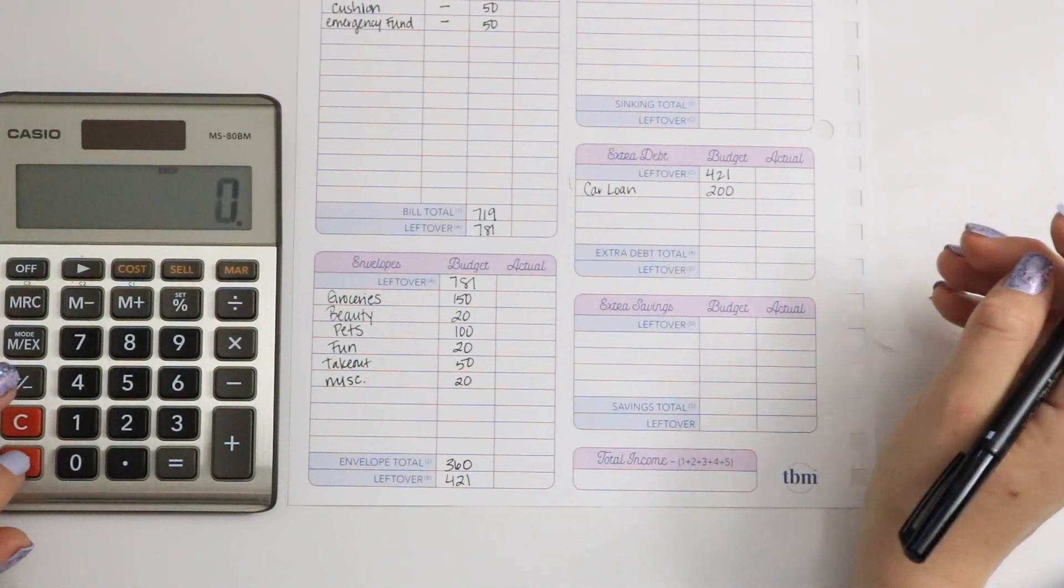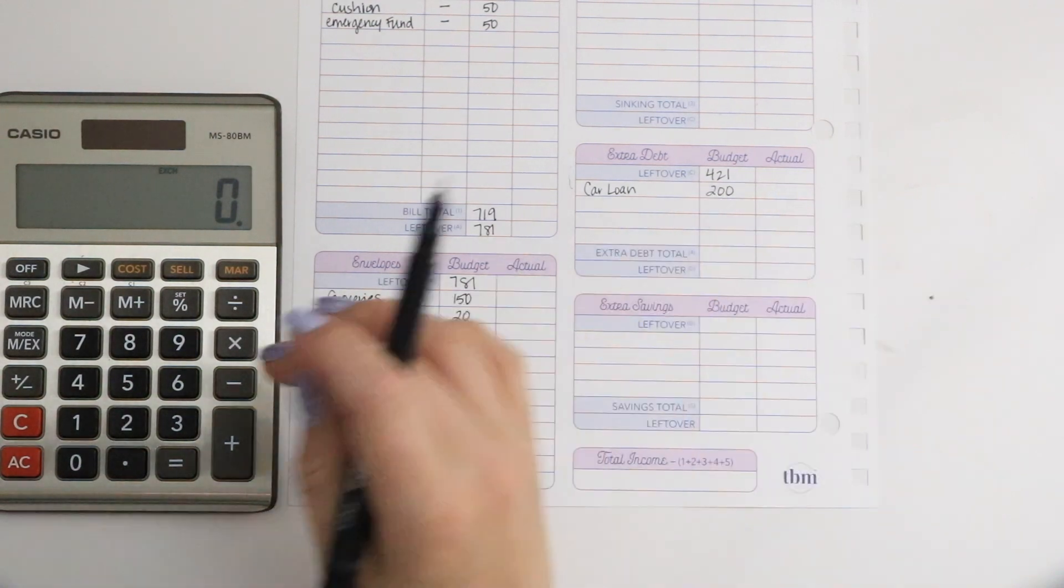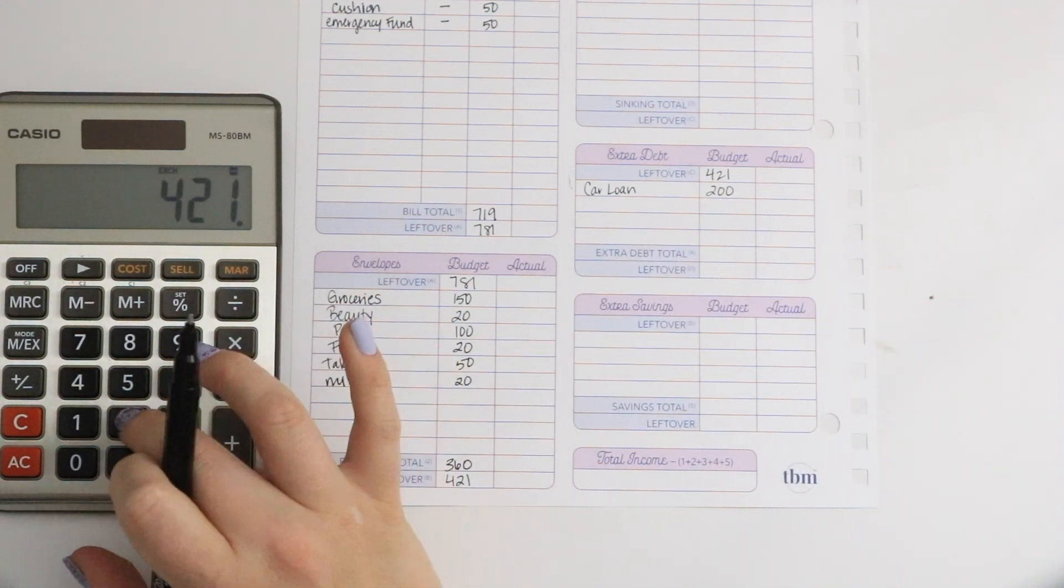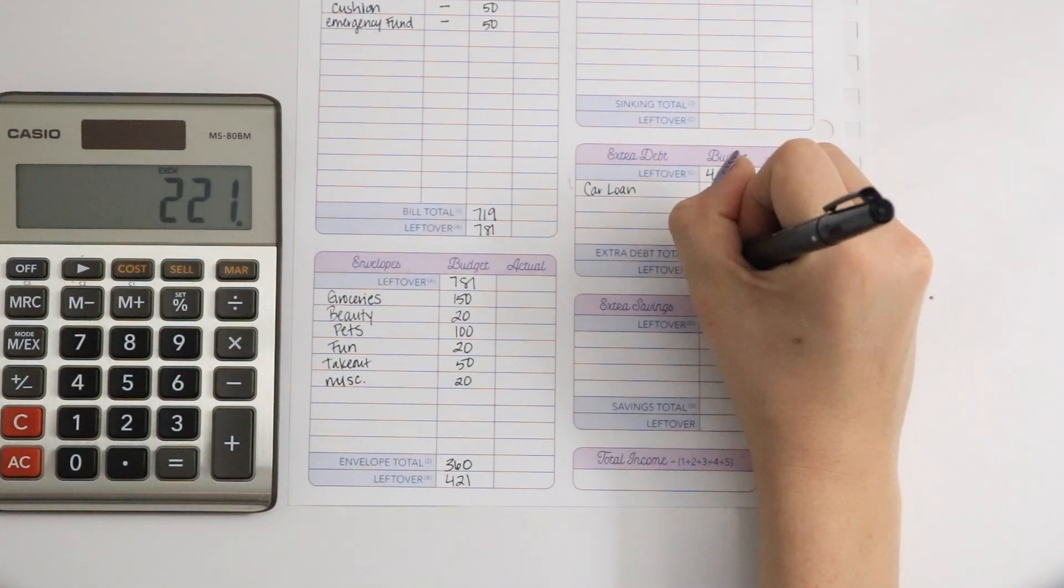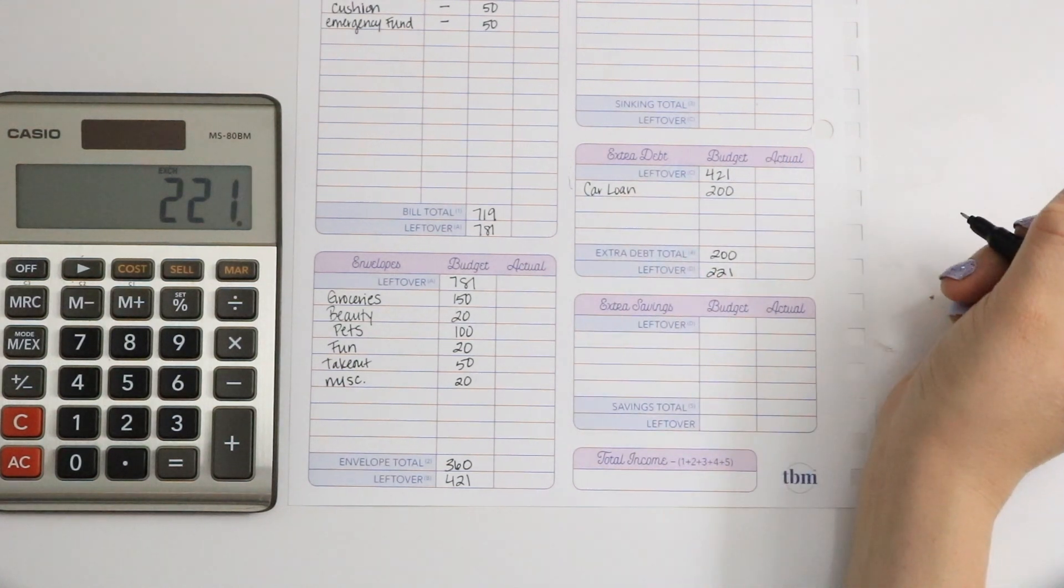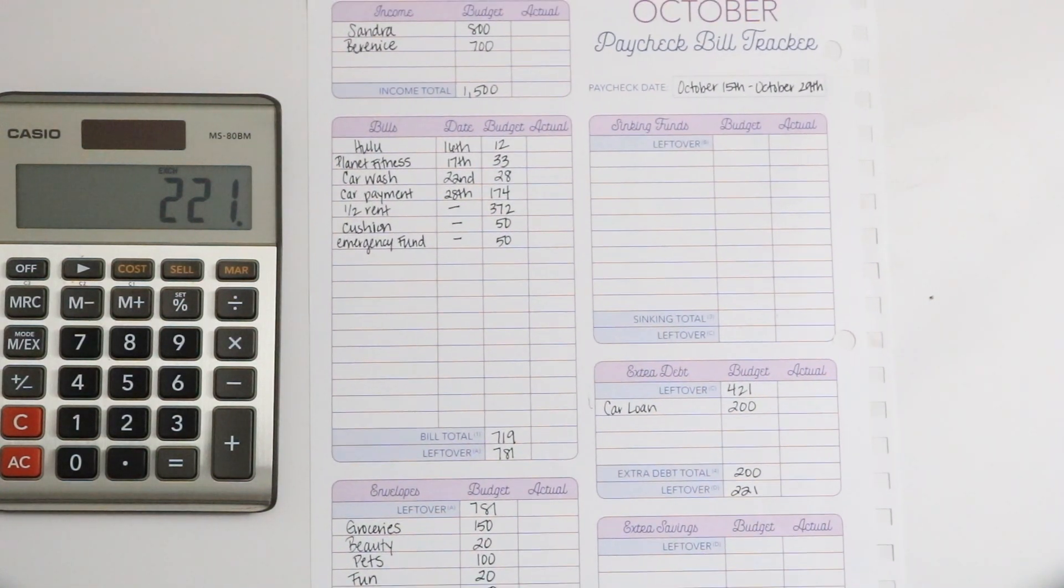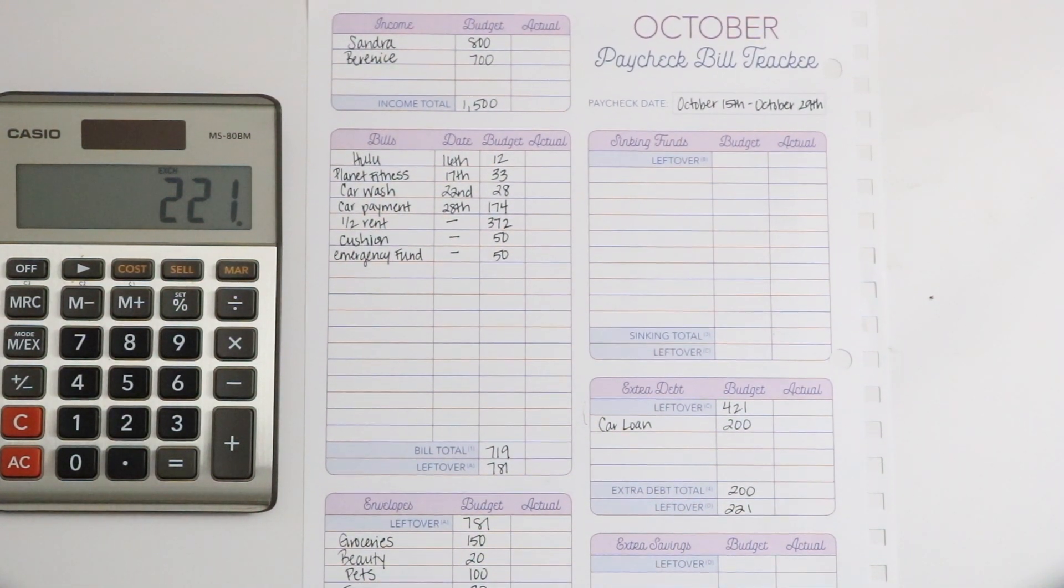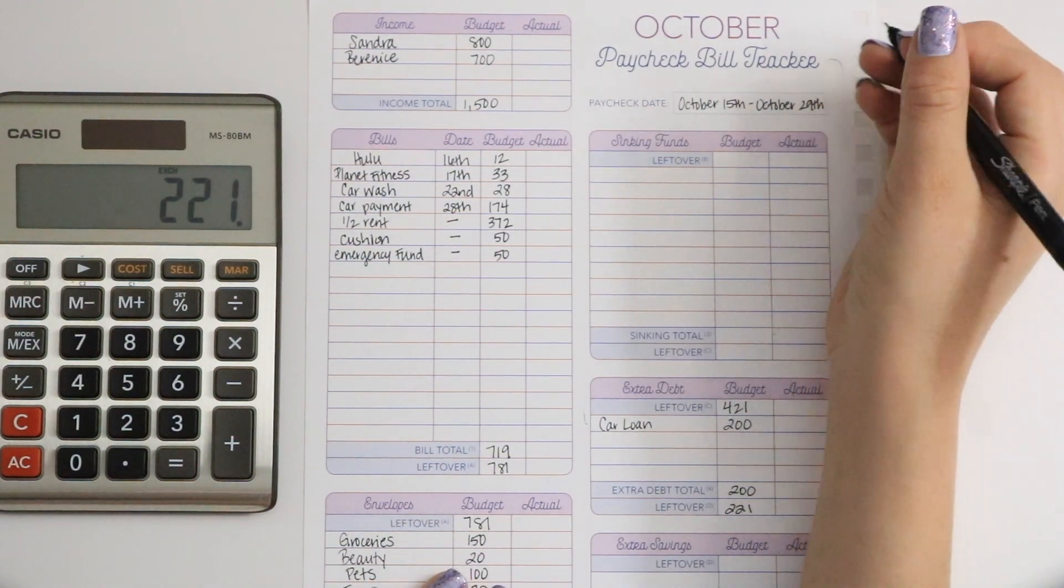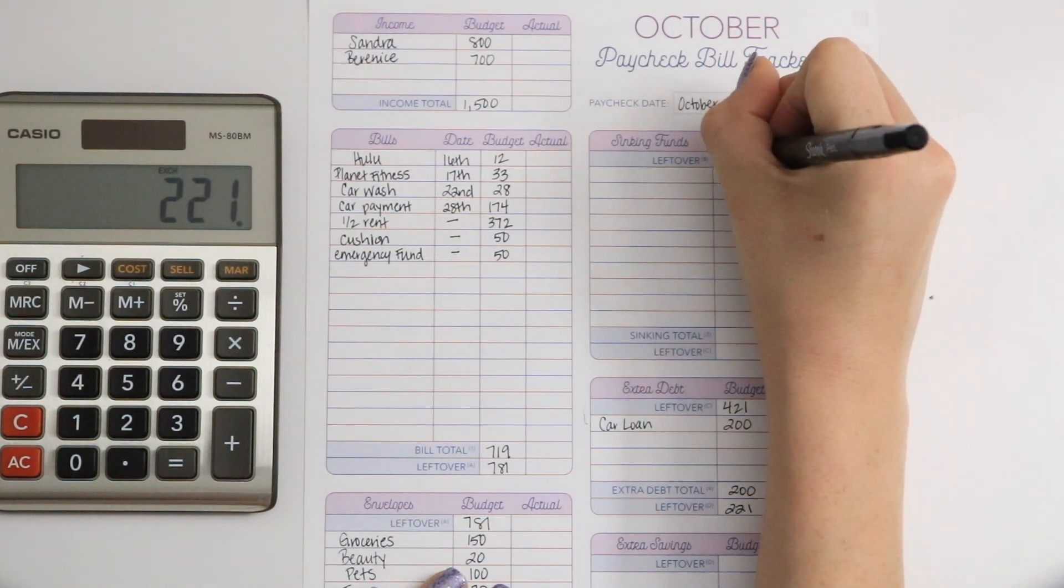We're going to subtract 421 minus 200, which gives us a total of $221. And with that, I'm going to be stuffing my or filling in my sinking funds.